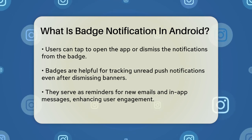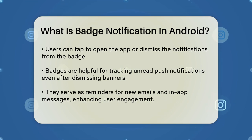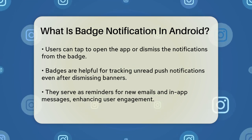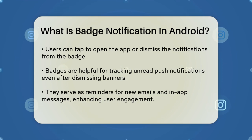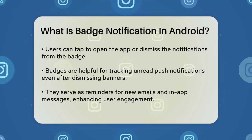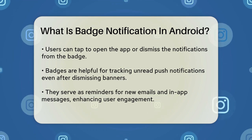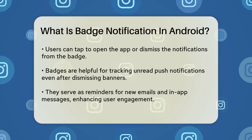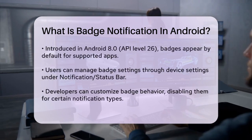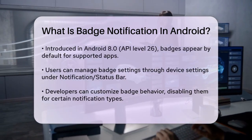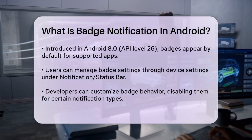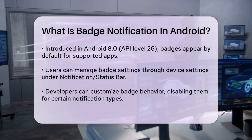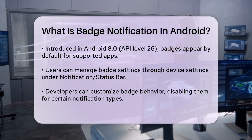Android specifics. Starting with Android 8.0 API level 26, these badges appear by default on the app launcher icon for apps that support them. You can control these badges through your device's settings. To enable or disable them, go to Settings, Notifications, Status Bar, Manage Notifications. Then select the app and choose whether to show a dot badge or a numbered badge.